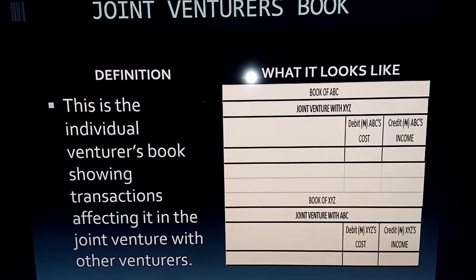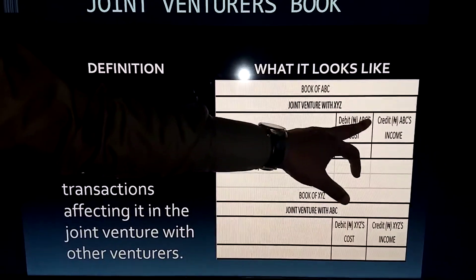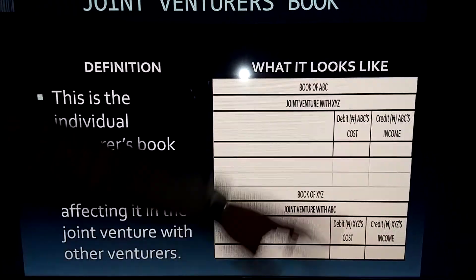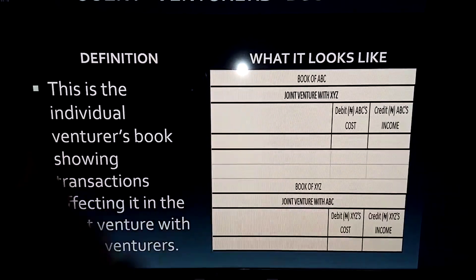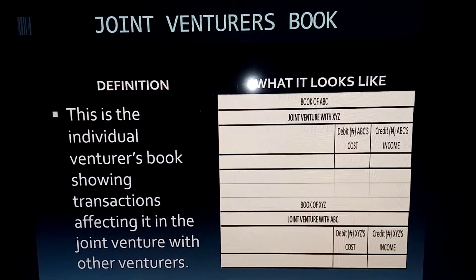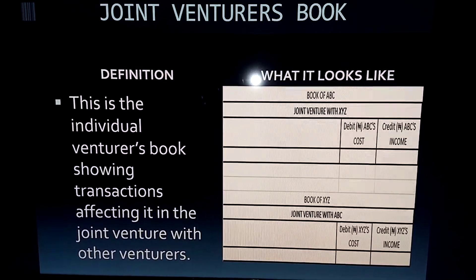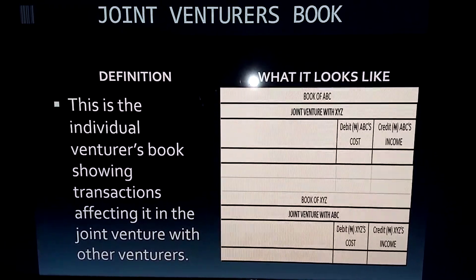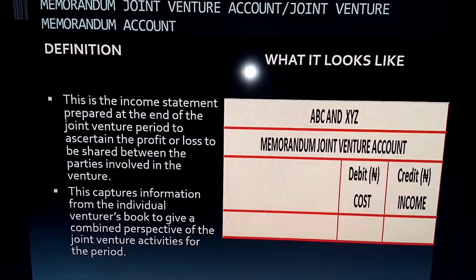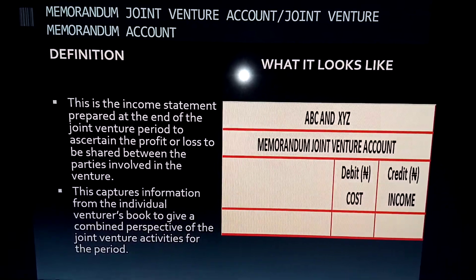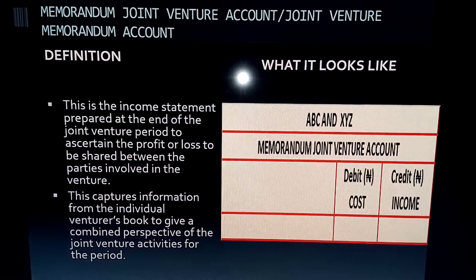So basically, in each venturer's book you keep records traceable to you — spends you've made and incomes that came to you. The memorandum joint venture account, or joint venture memorandum account, is the combined income statement of the venturers. You bring the venturers' records together and prepare a combined profit and loss statement showing the profit or loss of the joint venture business, which is then shared among the venturers. So we have ABC and XYZ memorandum joint venture account — debit all costs from both venturers, credit all incomes from both venturers — and at the end, identify the profit or loss and share accordingly.